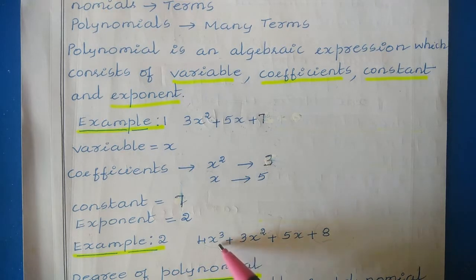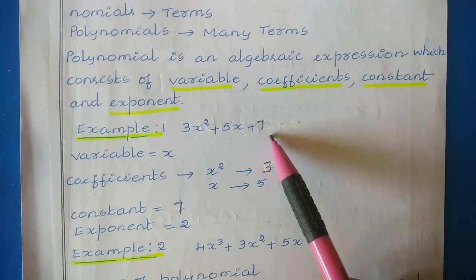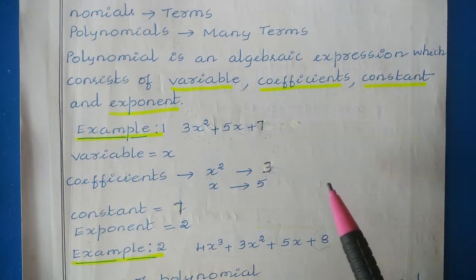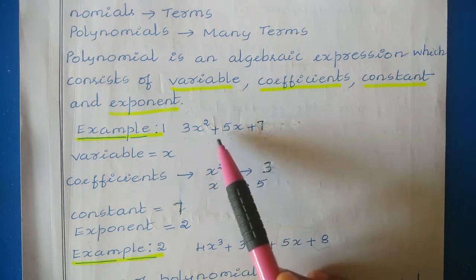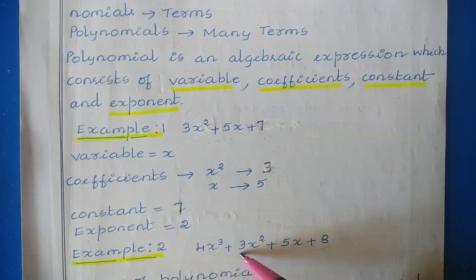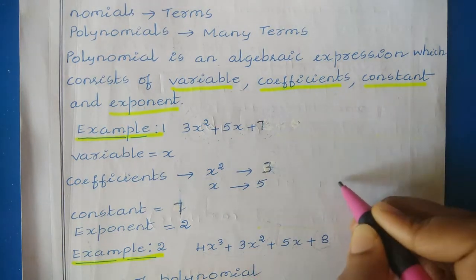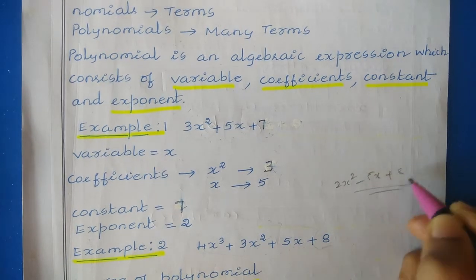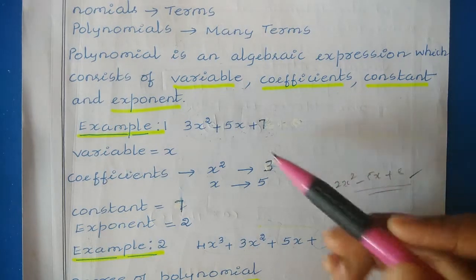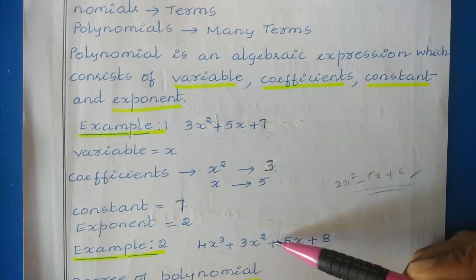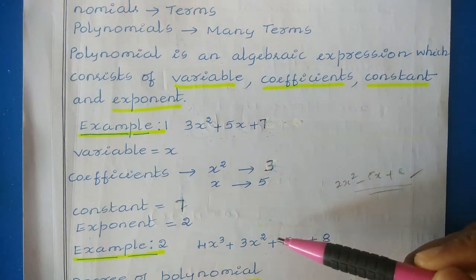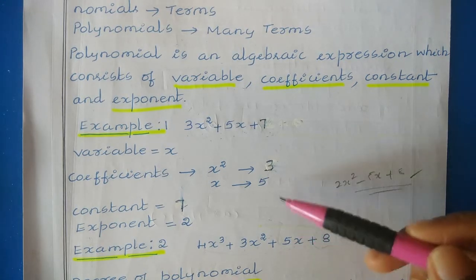In this second example we have 4 terms, while the first example had 3 terms. Many terms written together is known as a polynomial. In between terms we can have an addition or a subtraction symbol — for example, 2x² − 5x + 8 is also a valid polynomial. Plus or minus signs are both allowed, so addition as well as subtraction values are permitted.